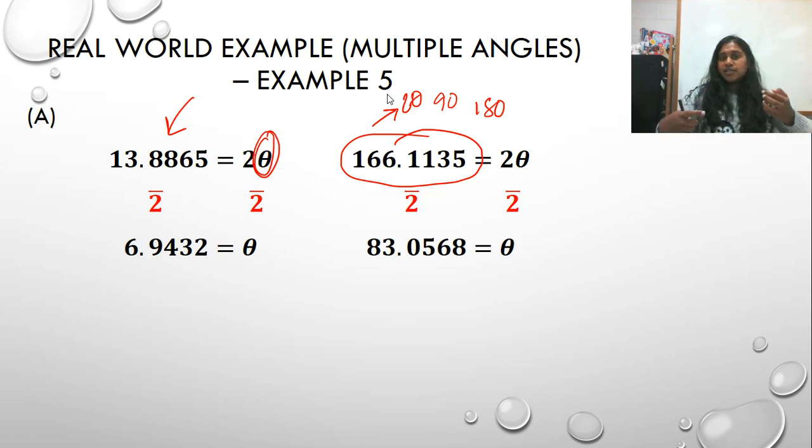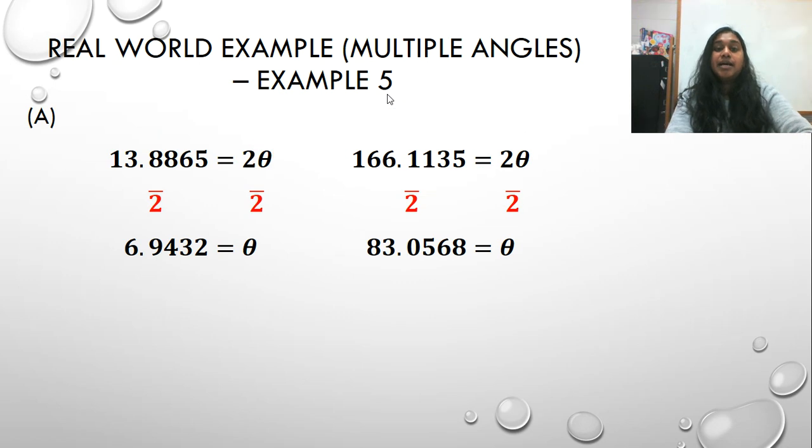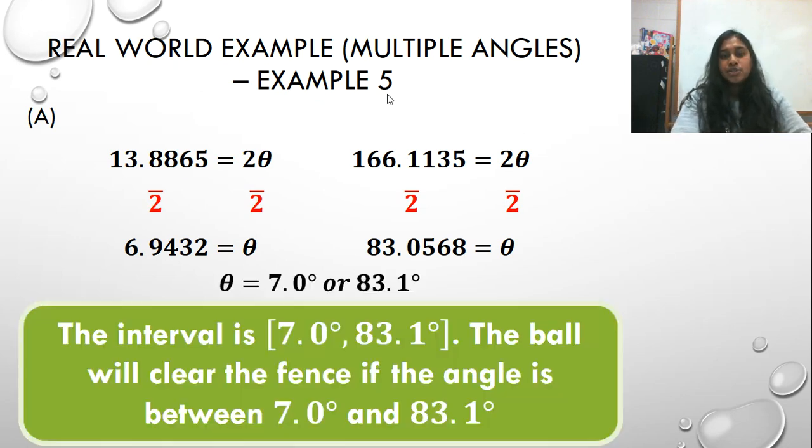So that's all I did. I know that's a slightly confusing concept. I hope that you just kind of see the pattern there and just accept it as, okay, well, this is just a property of the domain restrictions of my inverse because I manipulated the theta itself. You can also kind of look at your double angle identities to see if you see any pattern recognition from there. Okay, so these are my two answers, and because it's a word problem, I'm going to write the answer in a sentence, and I got the sentence from the question itself. The ball will clear the fence if the angle is between 7 degrees and 83.1 degrees. Cool.